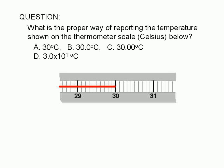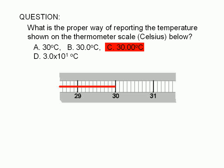What is the proper way of reporting the temperature on the thermometer scale shown here? Assume that the scale is in degrees Celsius. A: 30 degrees Celsius. B: 30.0 degrees Celsius. C: 30.00 degrees Celsius. Or D: 3.0 times 10 to the 1st degrees Celsius.